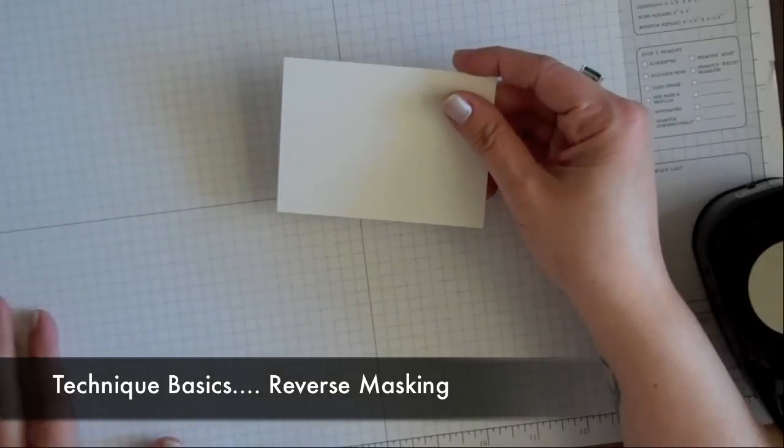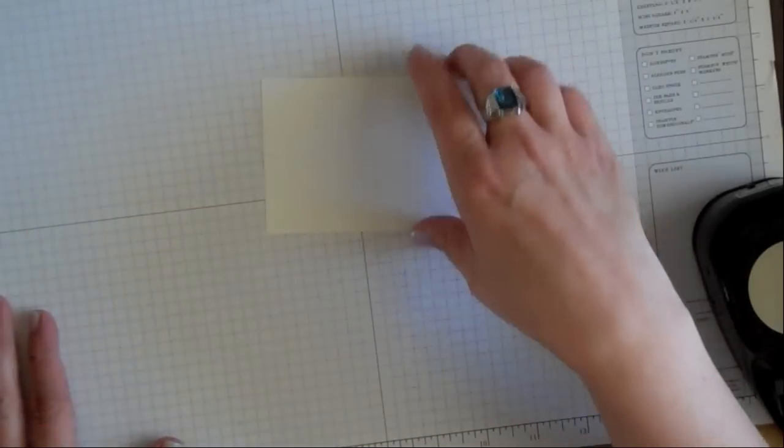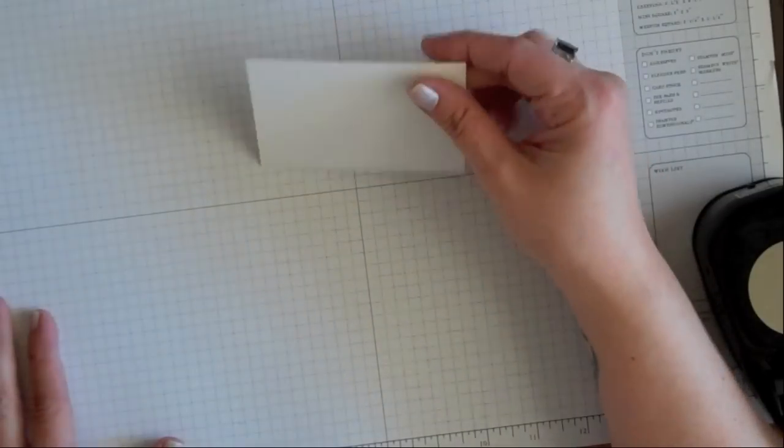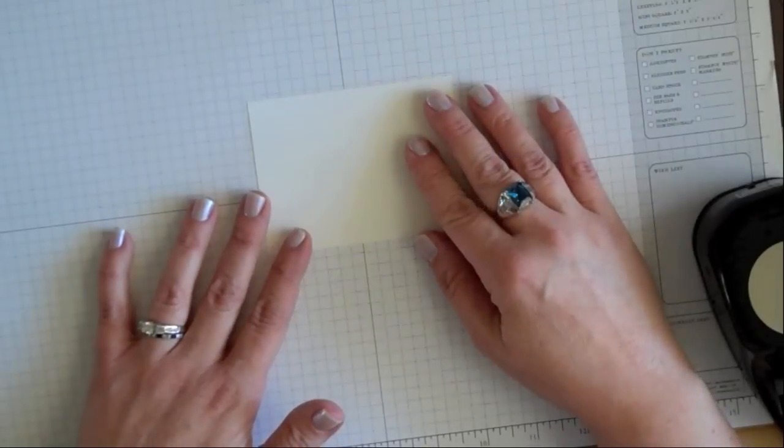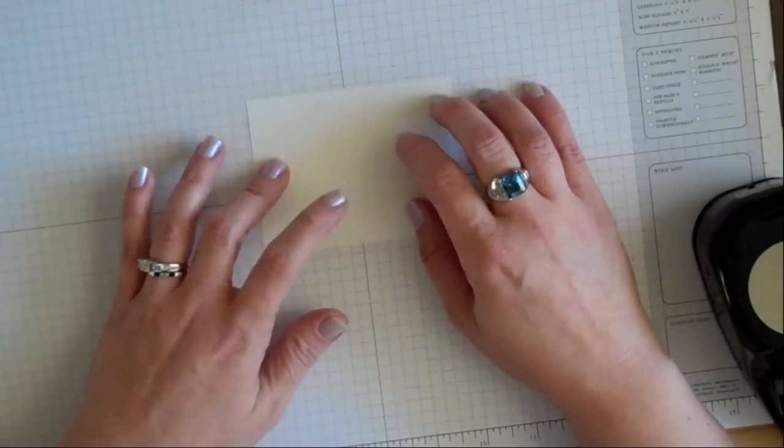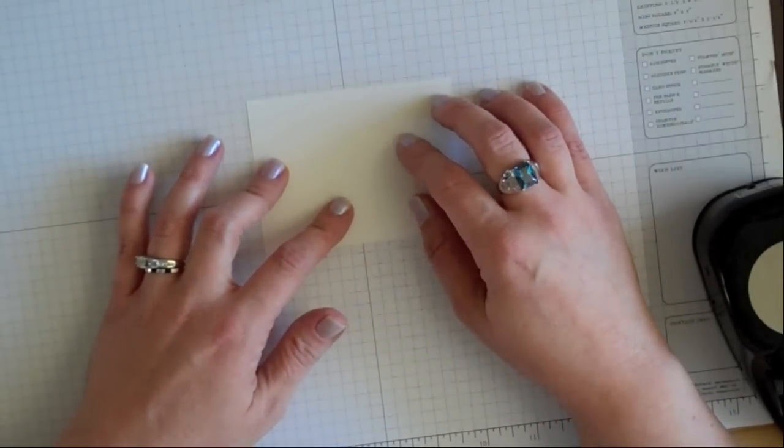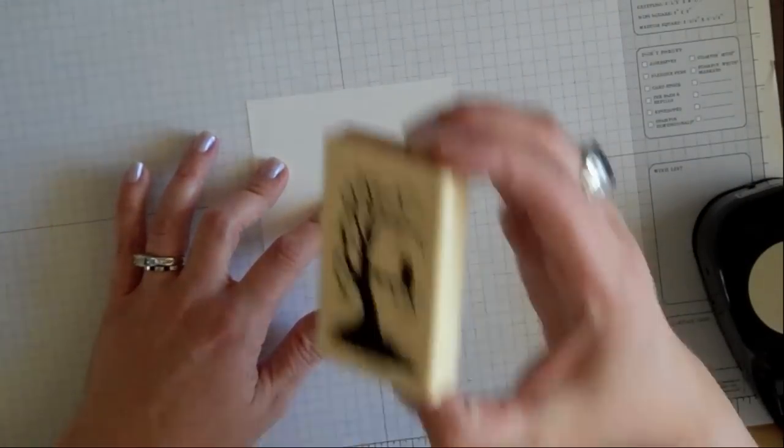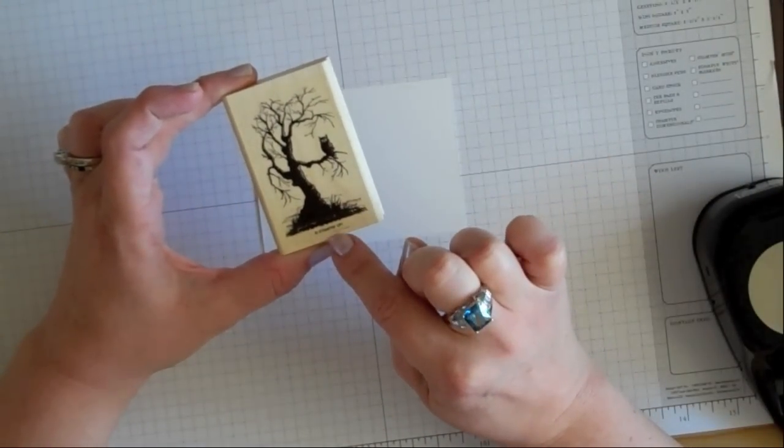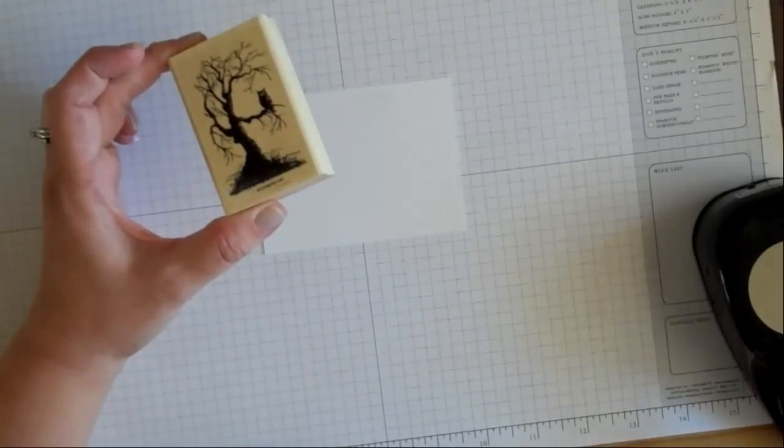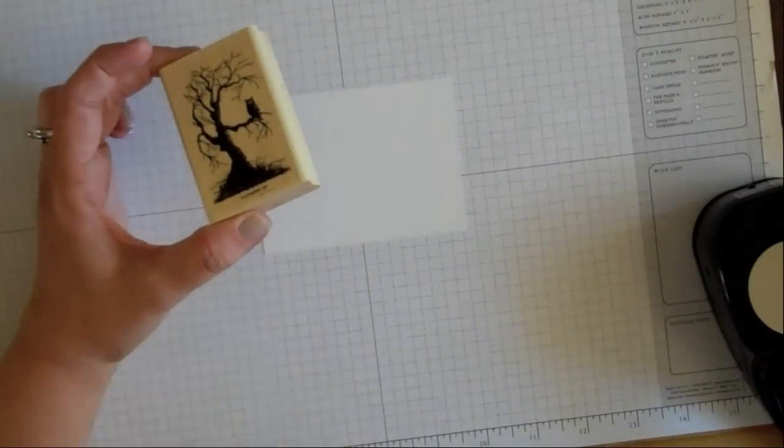First thing I'm going to start out with is a piece of Whisper White cardstock cut at four by three. We're going to go ahead and stamp our image. I'm going to use the Owl and the Tree from the House of Haunts stamp and I'm just going to stamp it onto my Whisper White cardstock with some black ink.